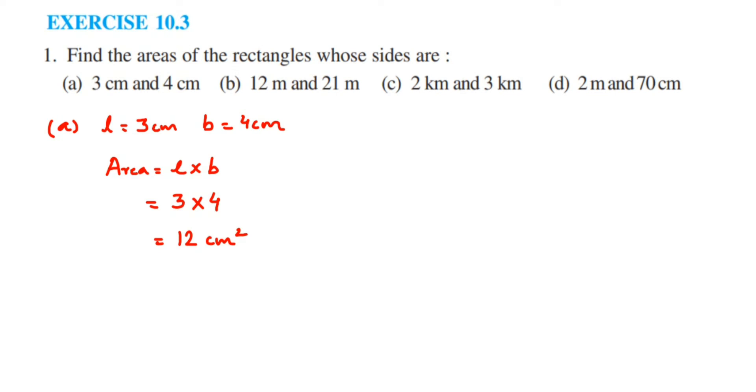Now second question. In the second one, length is given as 12 meter and breath is equal to 21 meter. Now area will be equal to, so area of formula is length into breath. Length is 12. So 12 multiplied by breath which is 21. So 12 into 21 is equal to 252. So we will get 252 meter square.